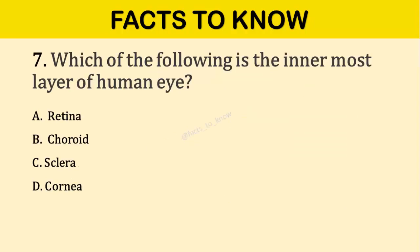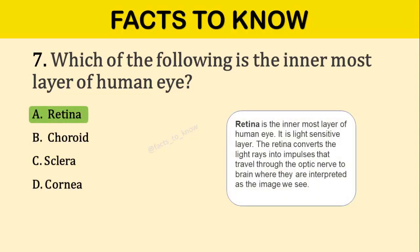Question number seven: Which of the following is the innermost layer of the human eye? The correct answer is option A: Retina. It is the light-sensitive layer.